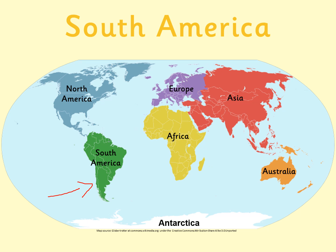So we have North America, South America, Africa, Europe, Asia, Antarctica, and Australia. Now, Australia — sometimes you may have heard it being referred to as Australasia or Oceania. They're both the same; sometimes people call it by different names, but just remember that it's the same.